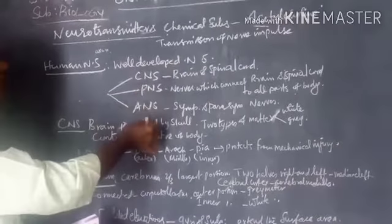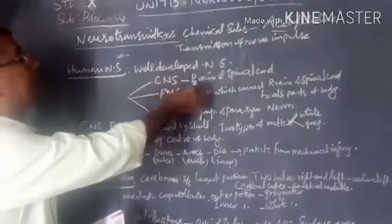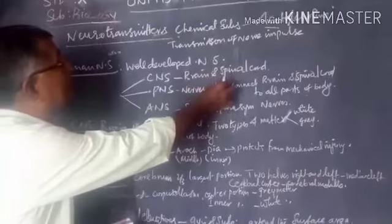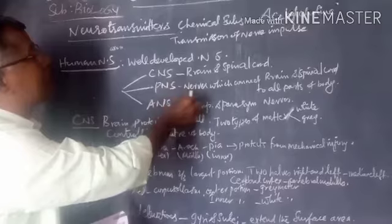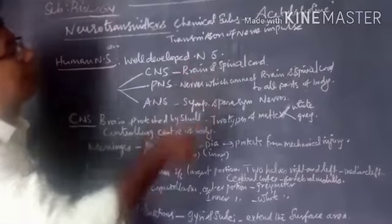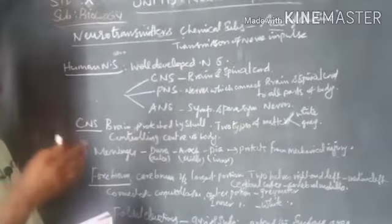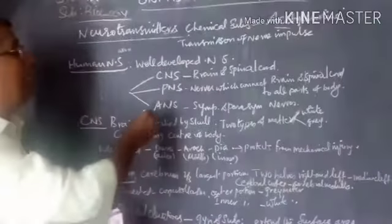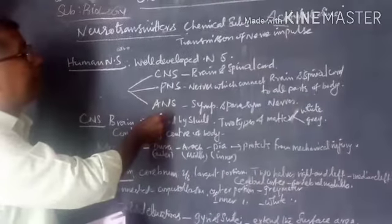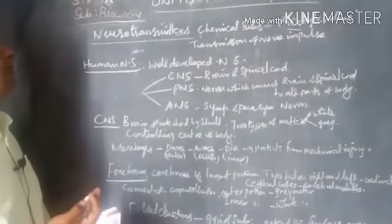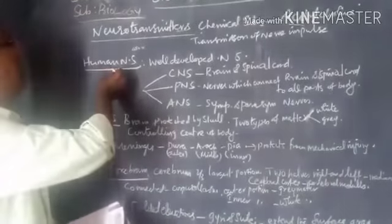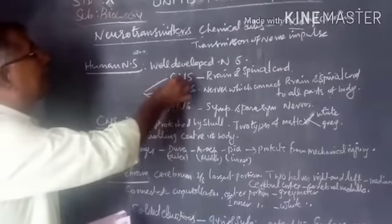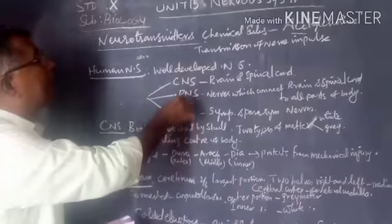The central nervous system consists of the brain and spinal cord. The peripheral nervous system consists of nerves which connect the brain and spinal cord to all parts of the body. The autonomic nervous system comprises the sympathetic and parasympathetic nervous systems.